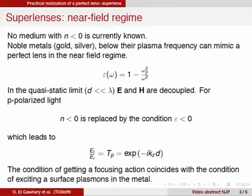However, we know that so far, no medium with such a negative index of refraction has been found in nature. It has been suggested that noble metals, like gold or silver, working below the plasma frequency, could mimic the behavior of a perfect lens in the near-field regime.